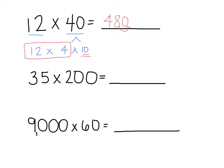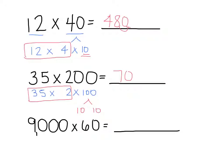Now in this case, I'm starting with 35 times 200. I know that 200 is the same thing as 2 times 100. So it becomes 35 times 2 times 100. I'm going to start with 35 times 2 because that's something that I know how to do, and I know that 35 times 2 will bring me to 70. Now I have to multiply times 100 — I can think of that as 10 times 10 — so I'm going to move over to the right 2 times for each 10. And that brings me to a total, or a product, of 7,000.